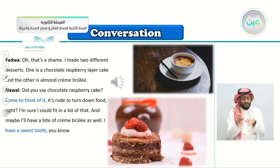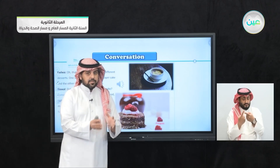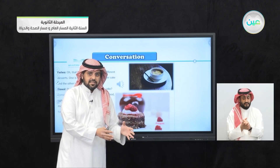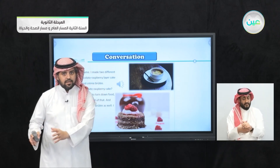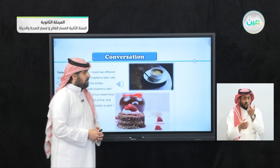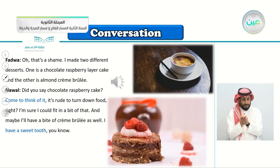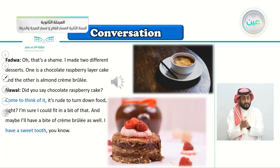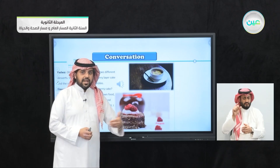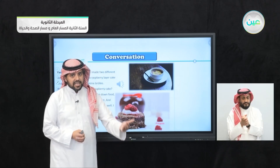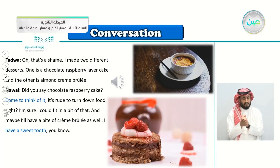'I made two different desserts.' This is one part of the meal. The first part is the appetizers, then the main dish, then dessert — sweet things. One dessert is a chocolate raspberry layer cake and the other is almond crème brûlée. Nawal says, 'Did you say chocolate raspberry cake? Come to think of it, it's rude to turn down food, right?' Rude means not polite. To turn down something means to say no.